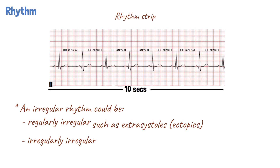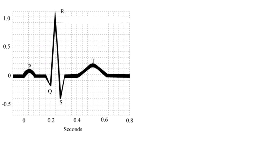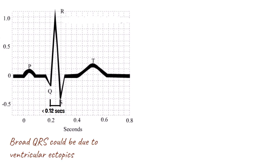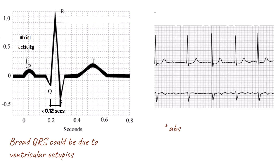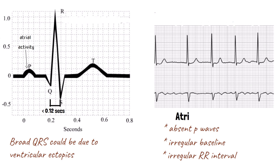Once the regularity of the rhythm has been assessed, the QRS morphology should be inspected. The QRS complex is less than 120 milliseconds, that is less than 3 small squares in duration under normal circumstances. If the QRS duration is greater than this value, then the rhythm might be coming from the ventricular myocardium. Having assessed the QRS duration, the rhythm strip and ECG should then be inspected carefully for the presence of atrial activity. As P waves correspond with atrial depolarization, this can be done by looking for the presence or absence of P waves. If there are no P waves present and the baseline is irregular with a regular ring interval, this is suggestive of atrial fibrillation.